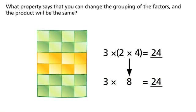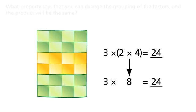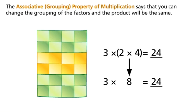What property says that you can change the grouping of the factors and the product will be the same? The associative property of multiplication says that you can change the grouping of the factors and the product will be the same.